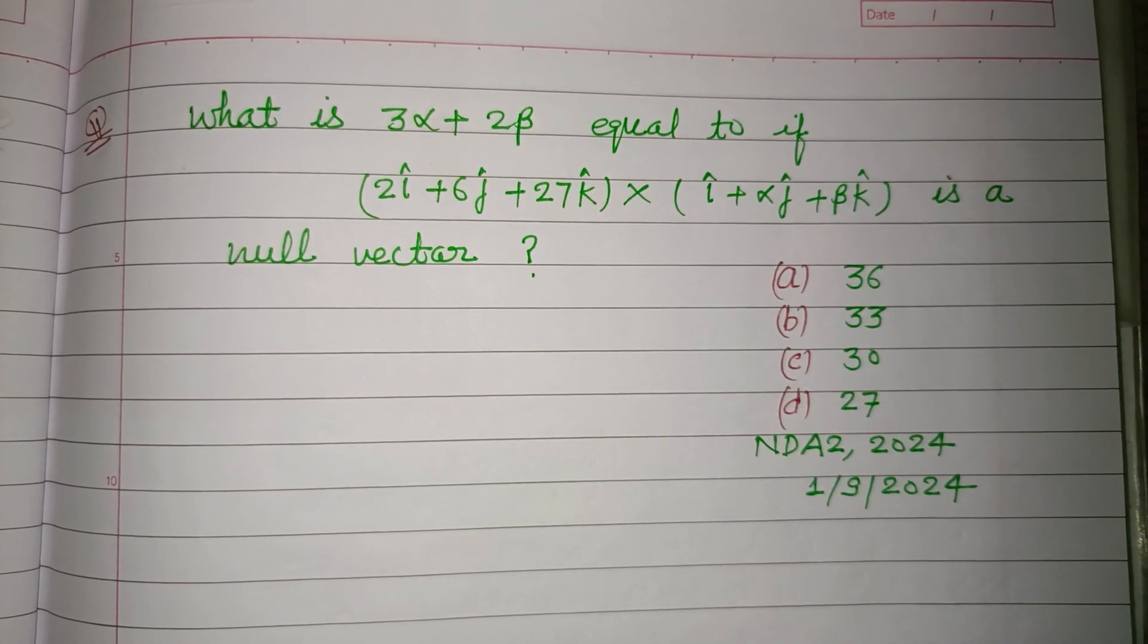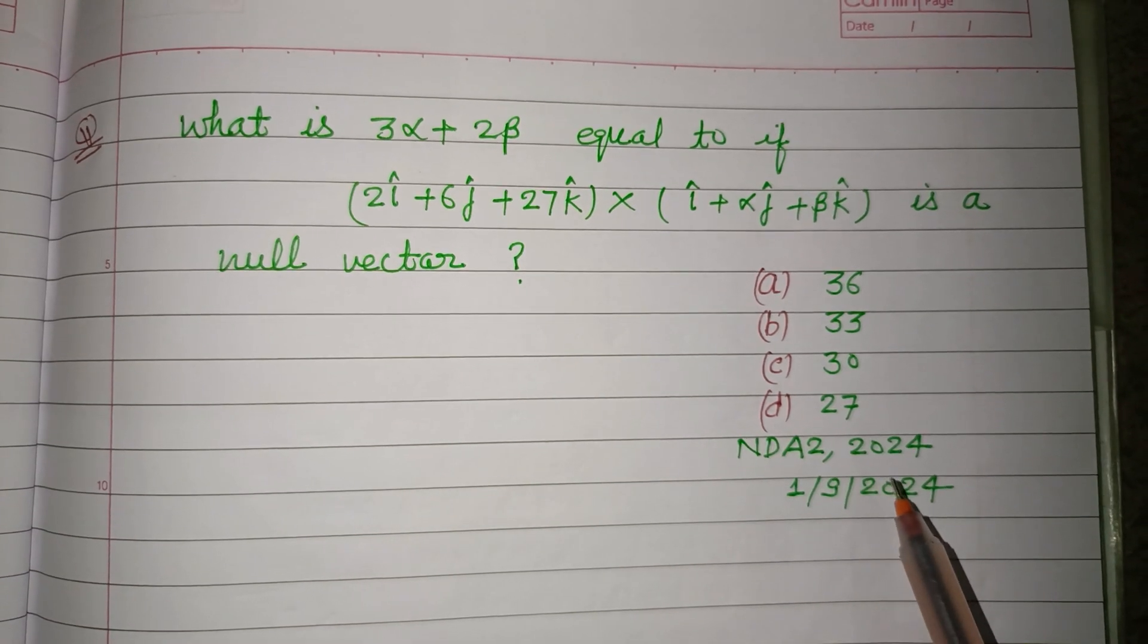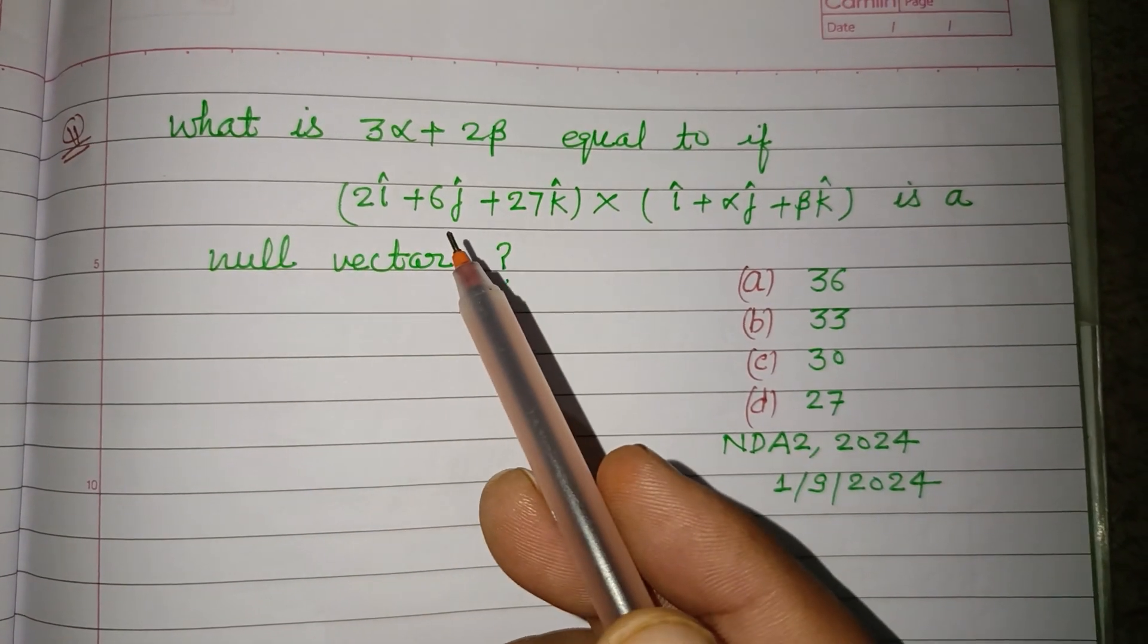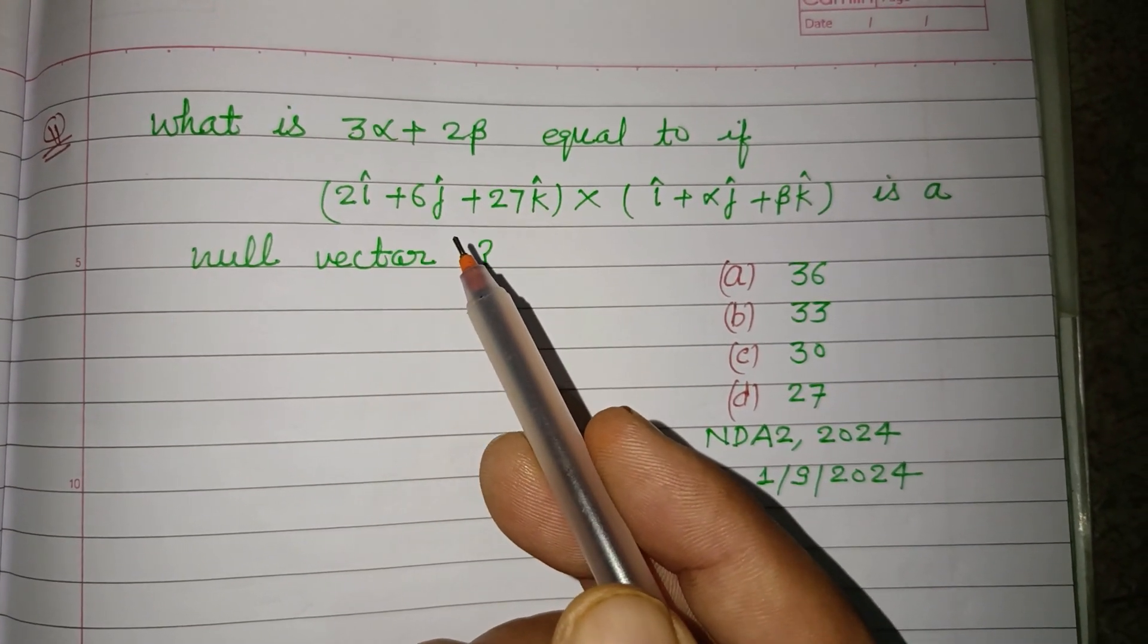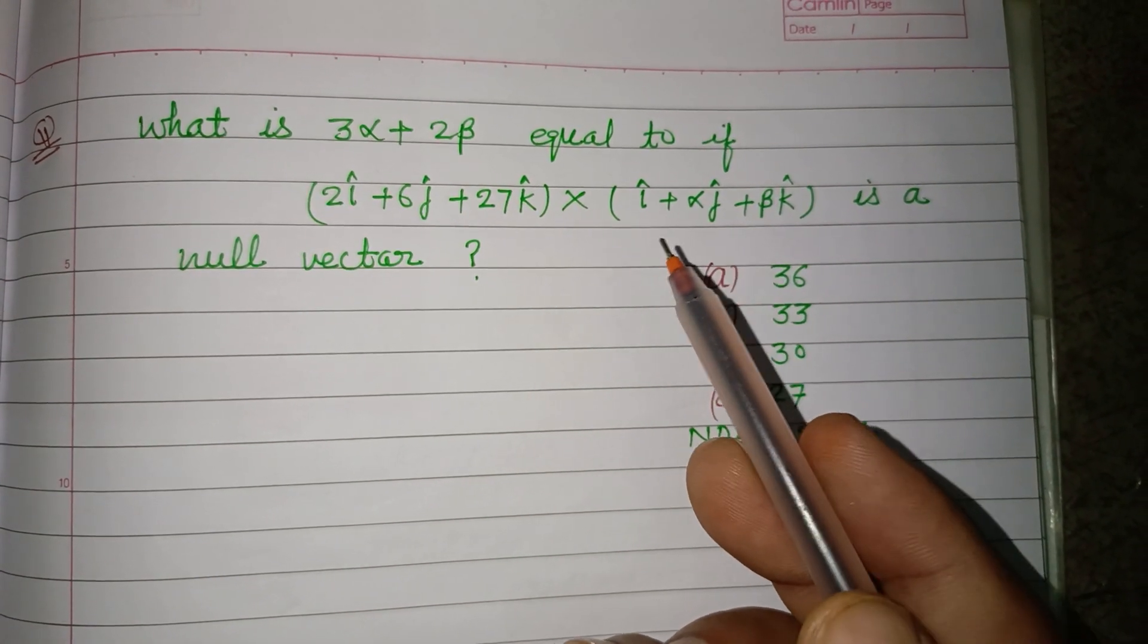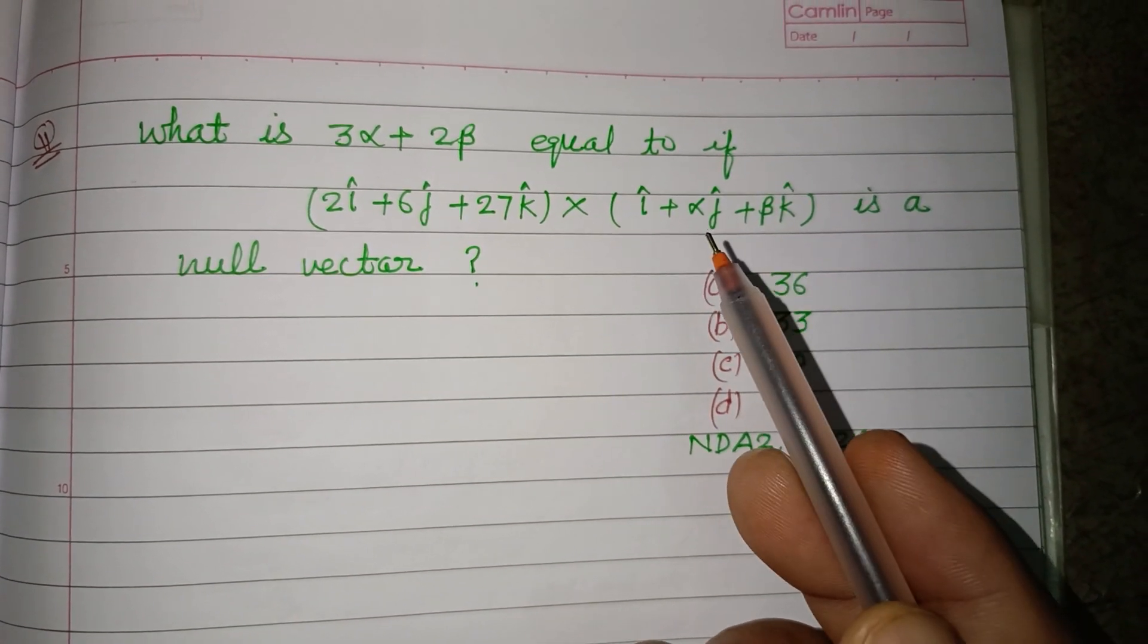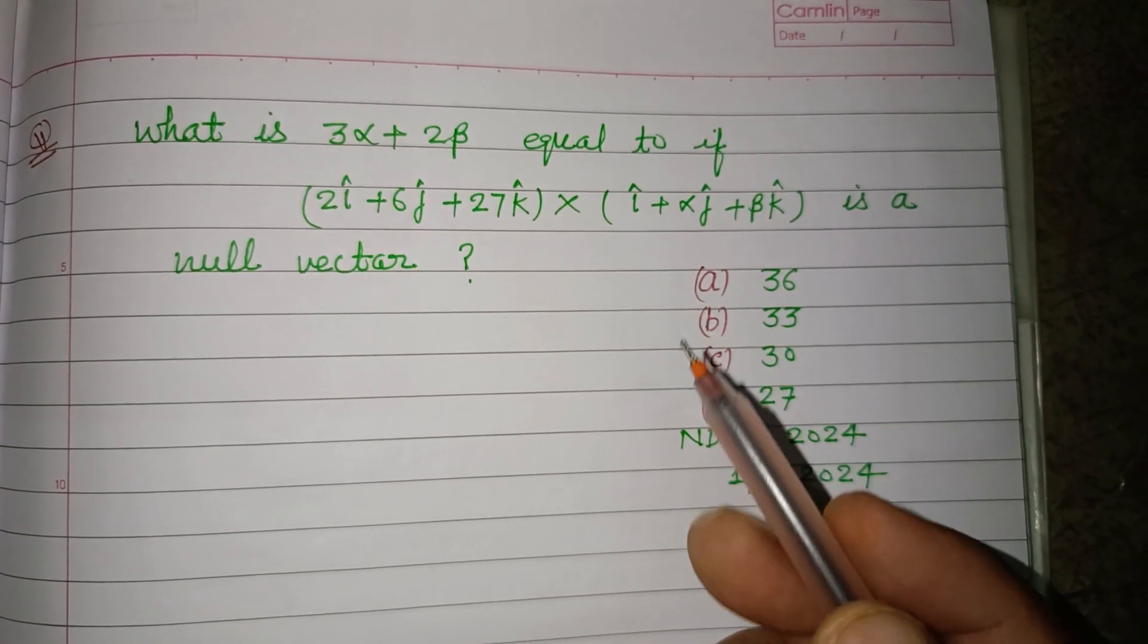Hello viewers, warm welcome to this YouTube channel. This is a question from NDA second 2024. What is 3α + 2β equal to if (2î + 6ĵ + 27k̂) × (î + αĵ + βk̂) is a null vector?